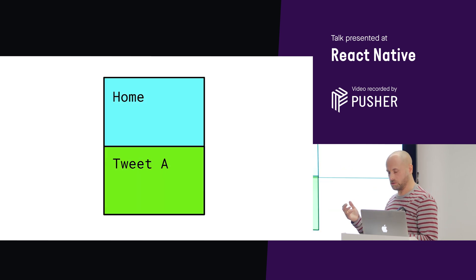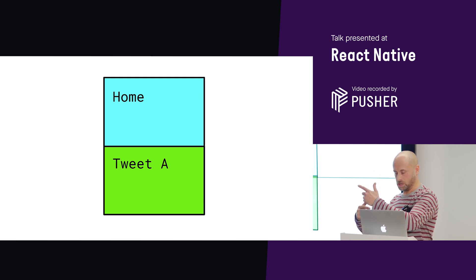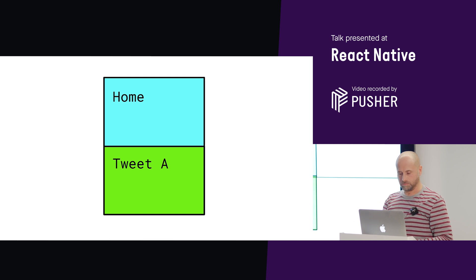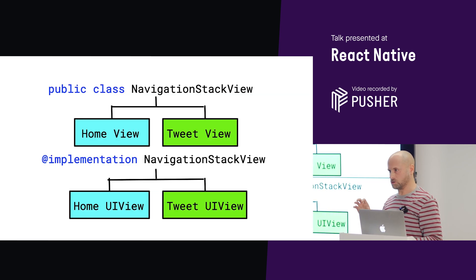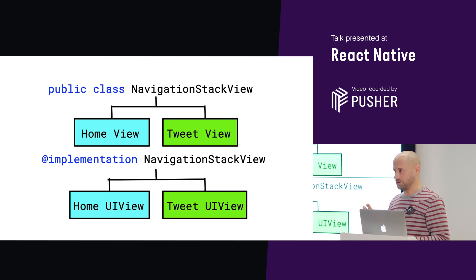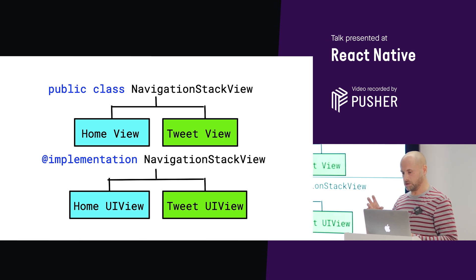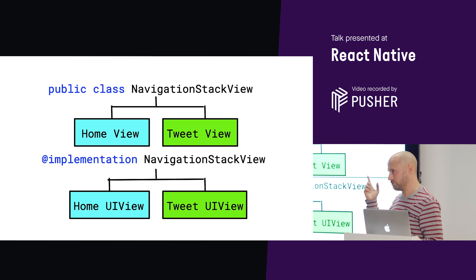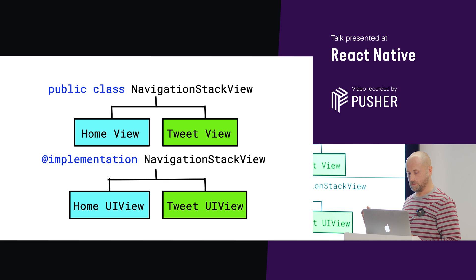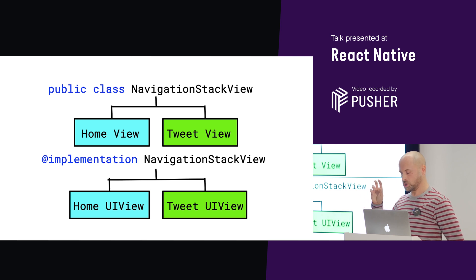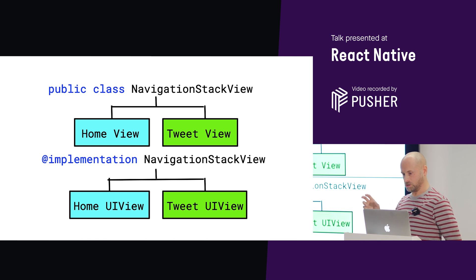If the NavigationStack component were just a regular JavaScript component, when we run our app we'd see both scenes rendered at the same time — the home scene at the top and the tweet scene at the bottom. But that's not what we're expecting. We're expecting the tweet scene to animate in over the top of the home scene. The NavigationStack component is not a regular JavaScript component — it's a native component. Because it's a native component, it can override the default behavior. There are corresponding NavigationStackView classes on both the Android side (a Java class) and the iOS side (an Objective-C class). React Native turns the home and tweet scene components into child views of these NavigationStackView classes.